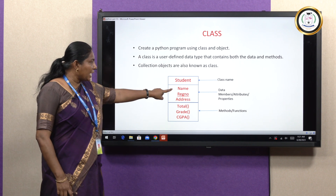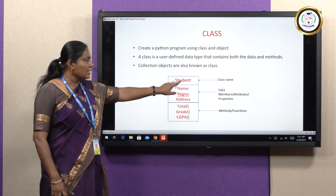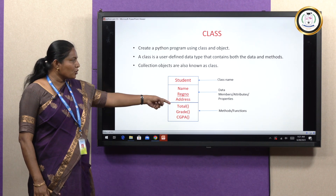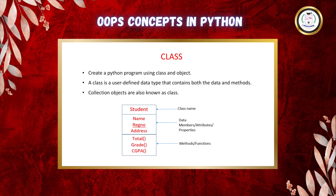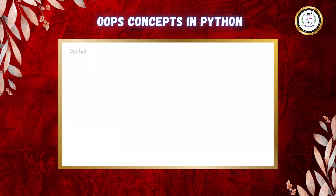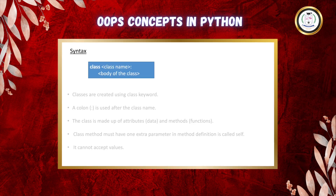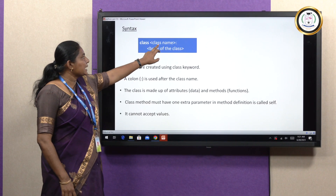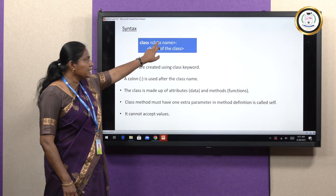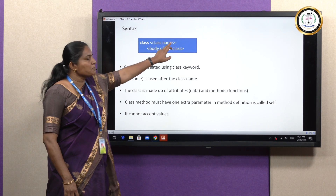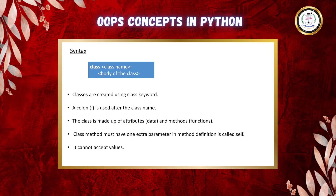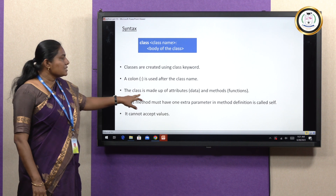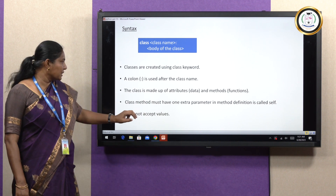Here, student is a class. Name, register number, and address are data members, also known as attributes or properties of a class. Calculating total, grade, and CGPA are methods or functions. This is the syntax for creating a class in Python. 'class' is a keyword, the class name is user-defined, and this statement must be terminated with a colon. The body of the class is made up of methods and functions.